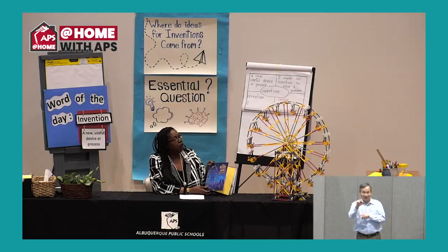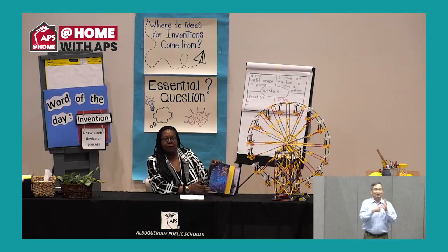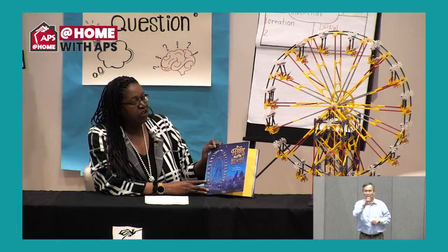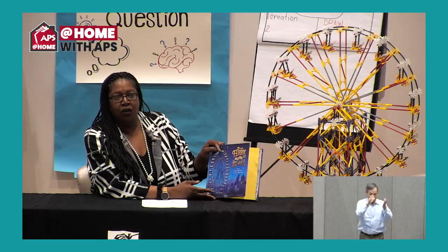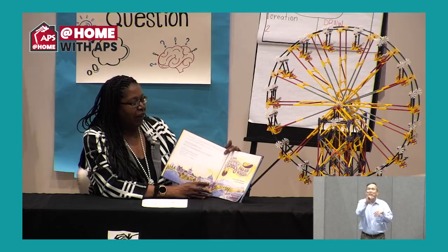Right here we have a Ferris wheel — they can go round and round, and they also go backwards. Sometimes the Ferris wheel seats swing back and forth. Today I'm going to read a book about Mr. Ferris and his wheel. It was written by Katherine Gibbs Davis and illustrated by Gilbert Ford. The publisher is Houghton Mifflin Harcourt Publishing Company. So we will begin hearing about Mr. Ferris and his wheel.